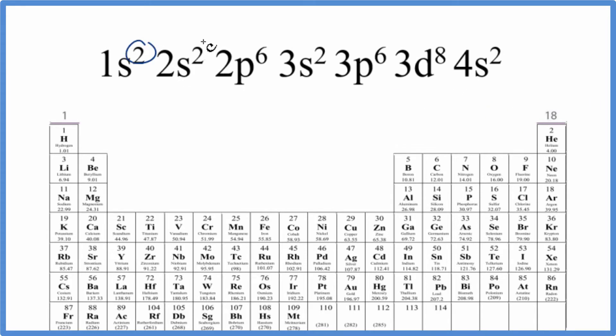The first way, we just count up all the electrons. If we have all these electrons here and count them up, we end up with 28 total electrons for the element represented by this configuration.